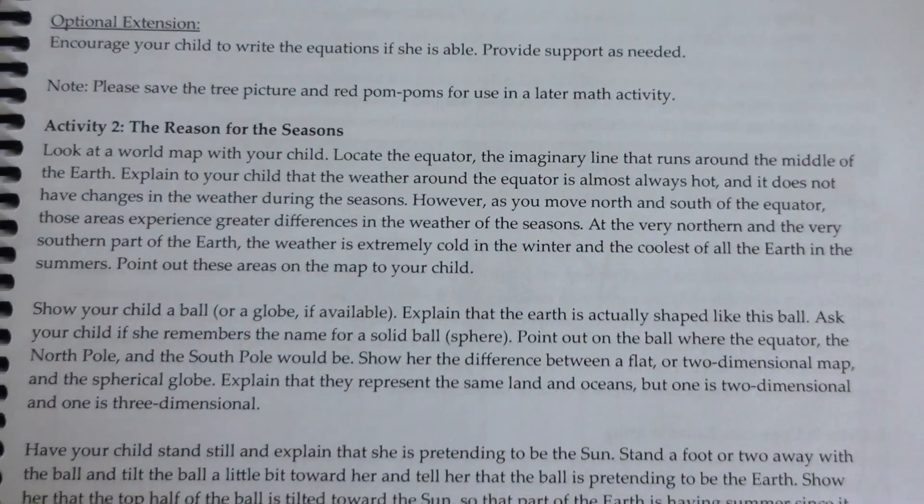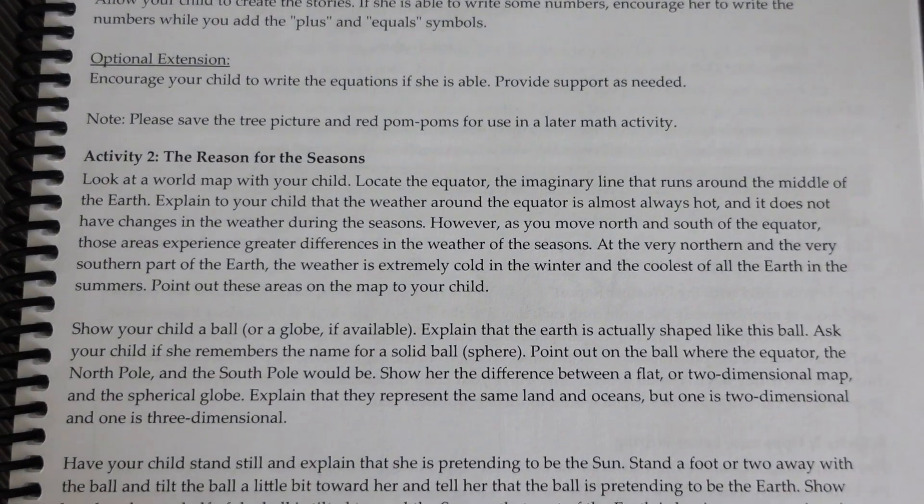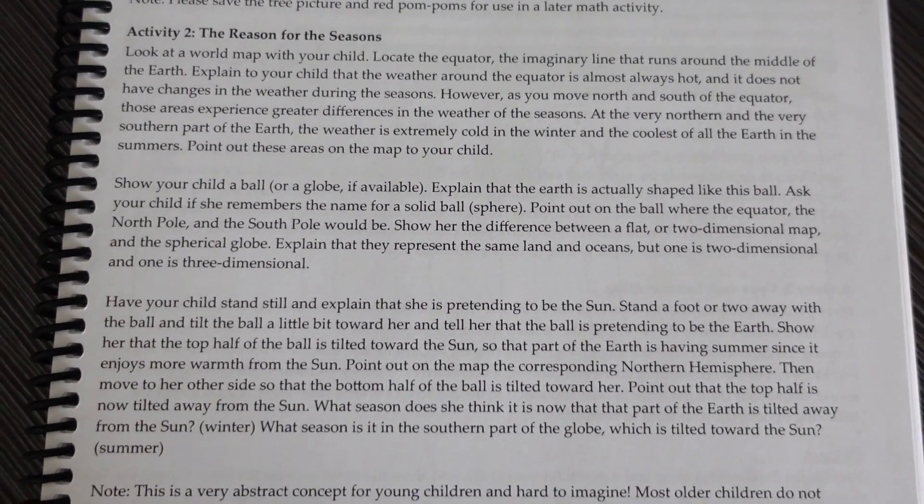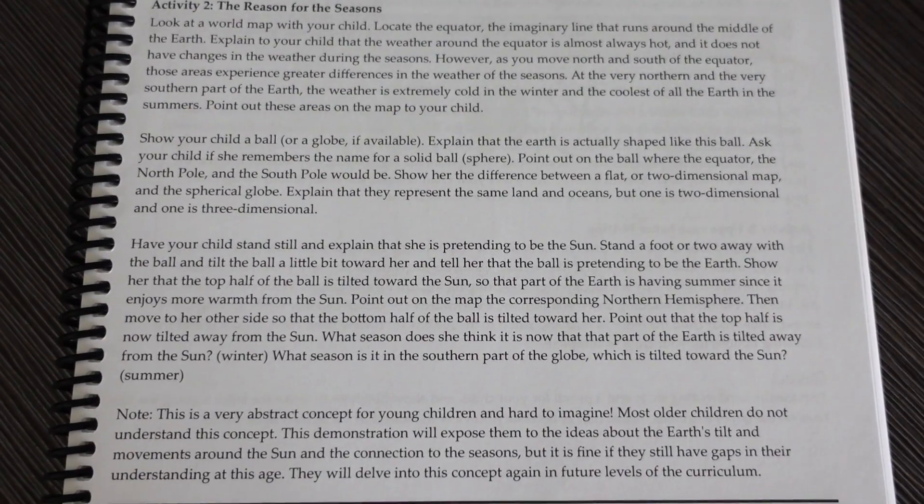The next activity includes the world map and either a globe or a ball. We're going to be talking about the equator. This is a very abstract activity, so it doesn't have a worksheet. You'll really be reading through the parent manual and explaining multiple concepts about looking at the map, looking at a round globe, and doing some activities with them standing up — a unique approach to get them up, moving, and thinking abstractly versus just pen to paper.